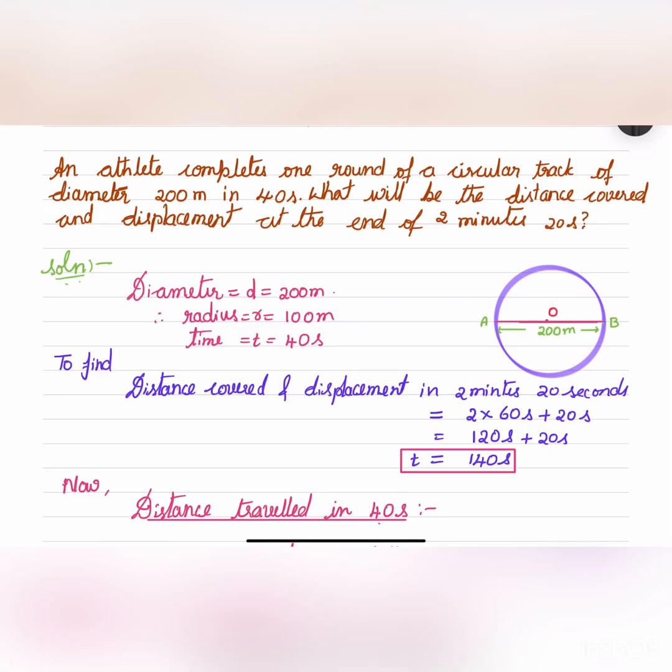Namaste everybody, welcome to my channel. An athlete completes one round of circular track of diameter 200 meters in 40 seconds. What will be the distance covered and displacement at the end of 2 minutes and 20 seconds?